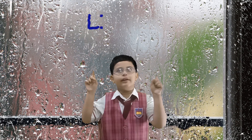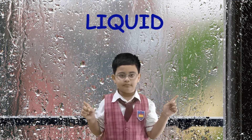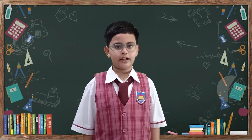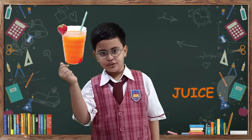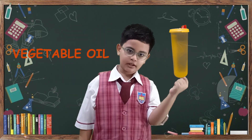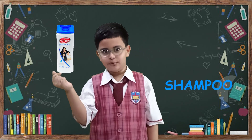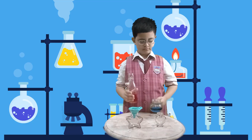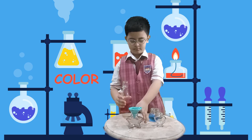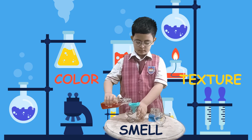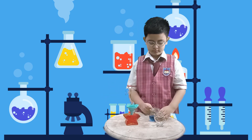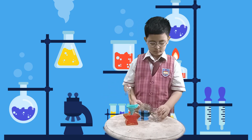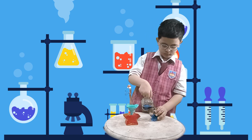Now, let's talk about liquid. Examples of liquids are water, milk, juice, vegetable oil, and shampoo. Liquids have color, smell, and texture too, but they don't have their own shape. They always take the shape of their container.